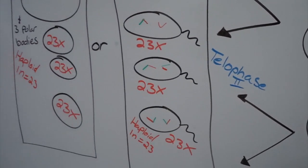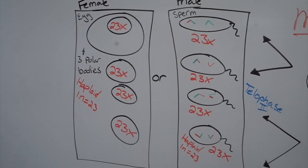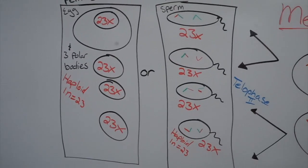In males, they are sperm with 23 chromosomes, and in females, that's 1 egg and 3 polar bodies with 23 chromosomes.